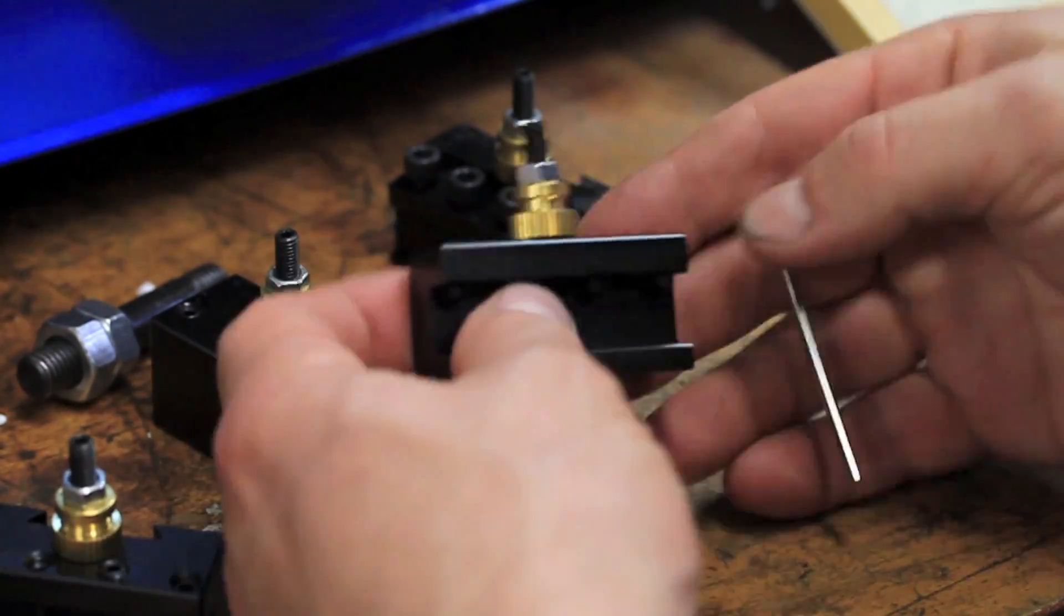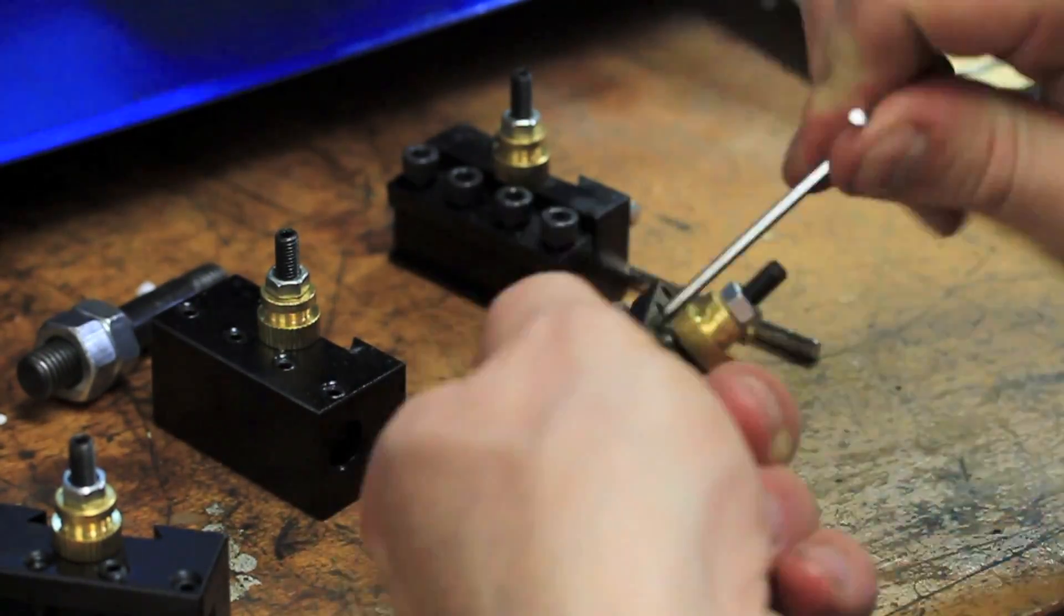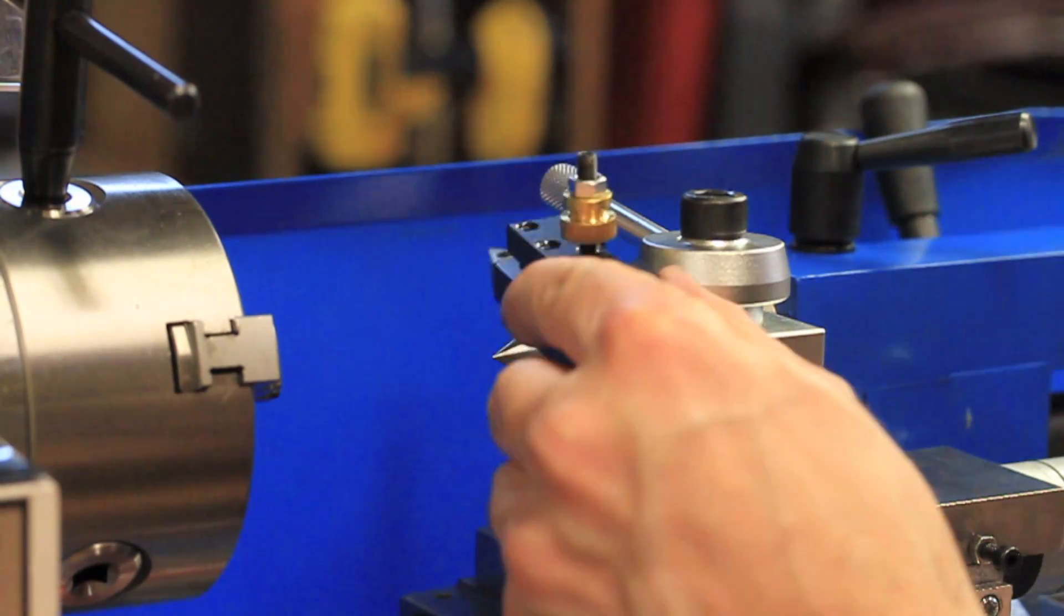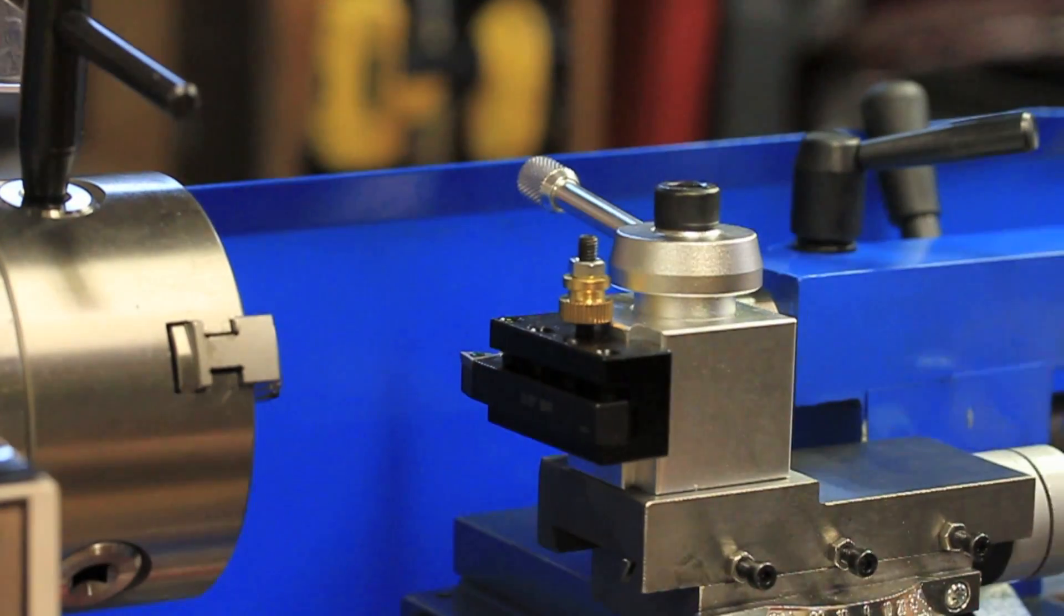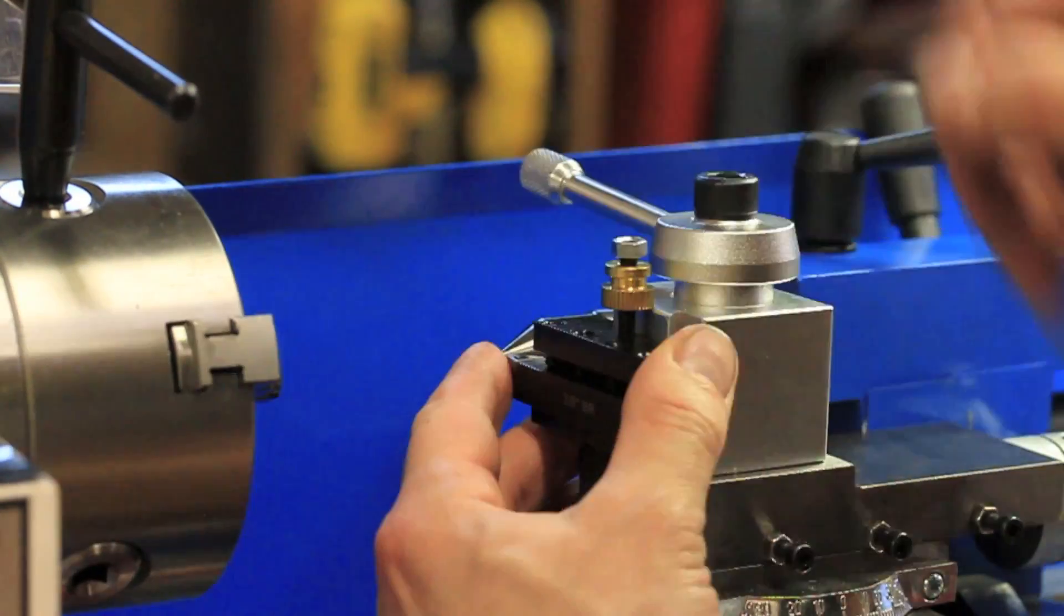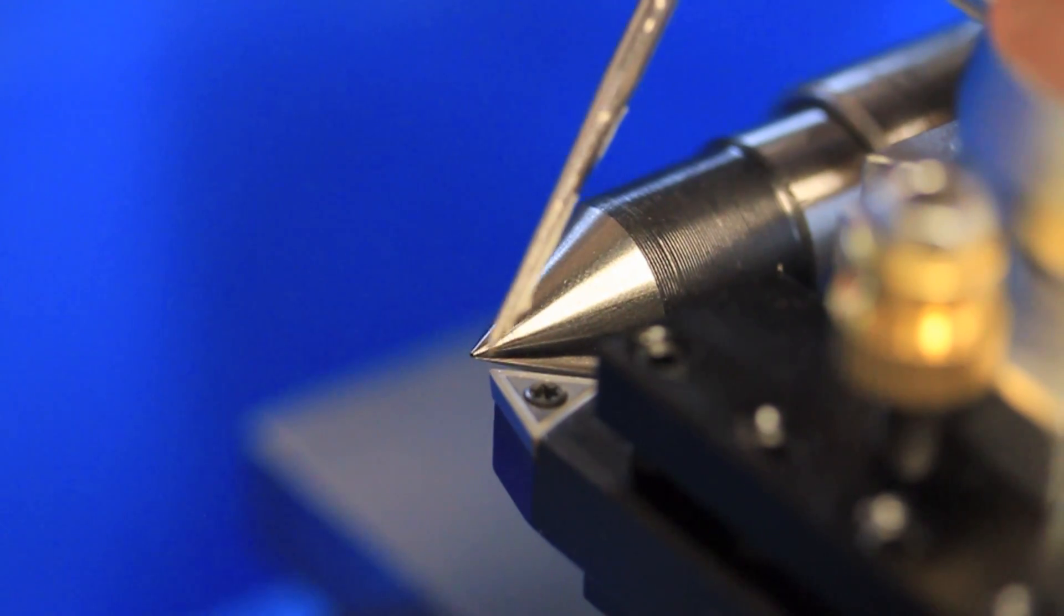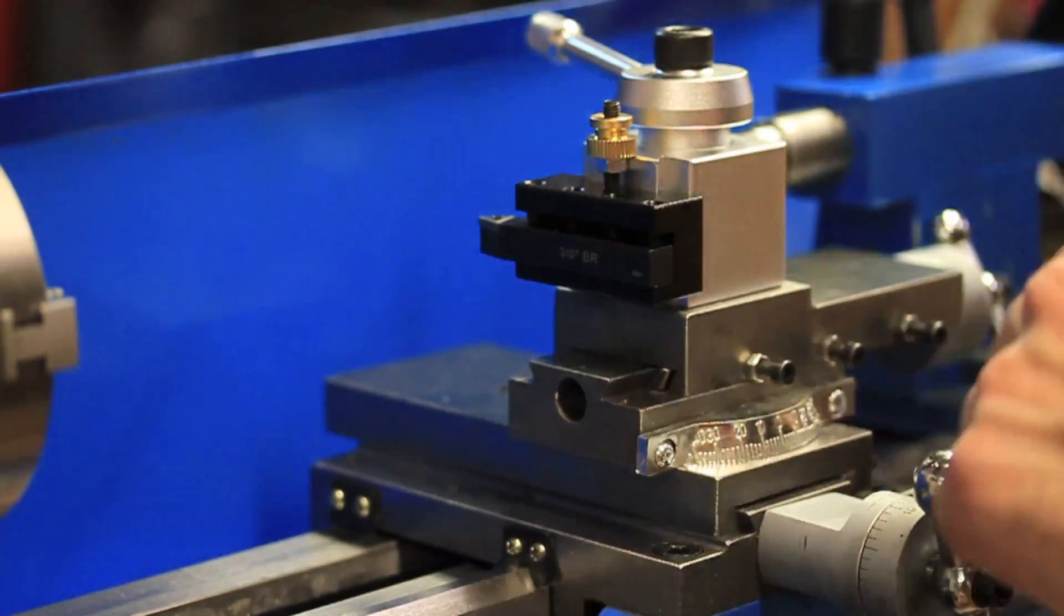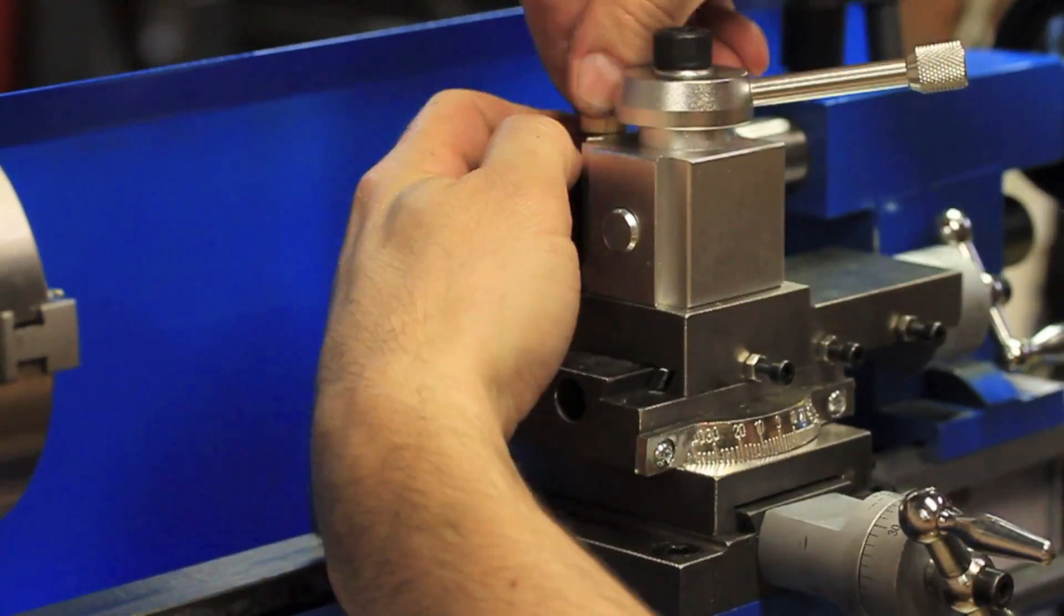Finally I had to add the tools to the tool holders. Making sure they were on center wasn't too big of a challenge. I just used the dead center in the tail stop to line up the tip of the tool with the tip of the dead center, and then repeated the process for the other tools.